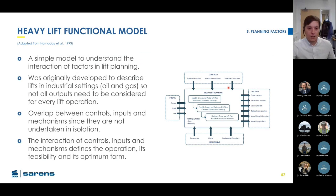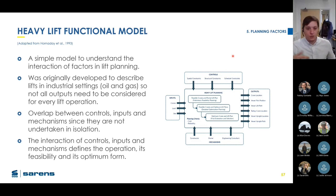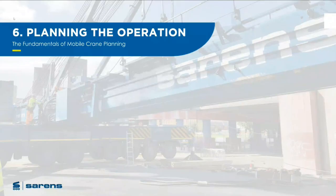If a control changes during planning, the documents need to be updated to recognize that change. The heavy lift functional model is a good framework — though developed for oil and gas, it's still applicable. It's important to note there is overlap between controls, inputs, and mechanisms — they're not undertaken in isolation and all affect each other. The interaction of these defines the operation's feasibility and its optimum form.